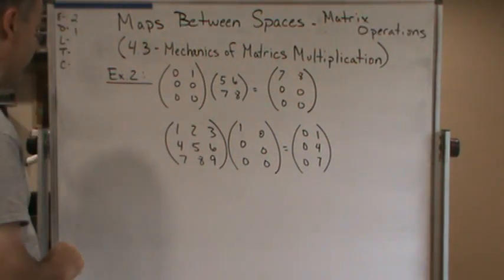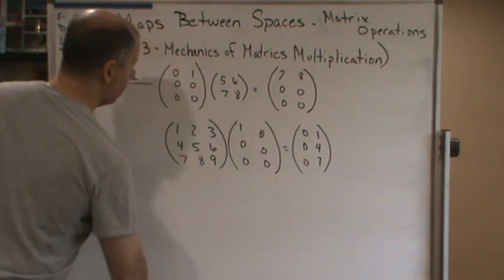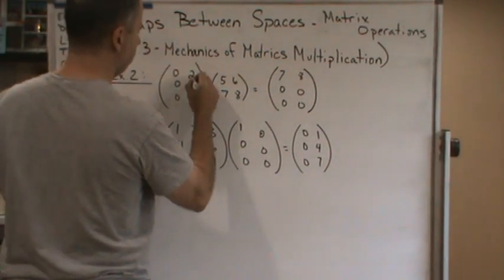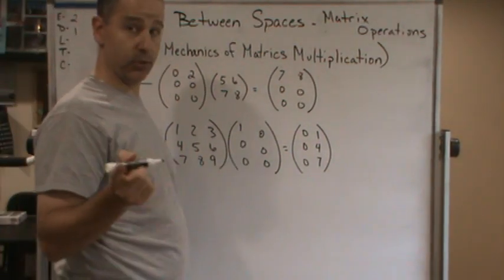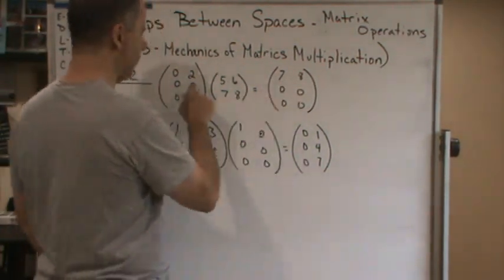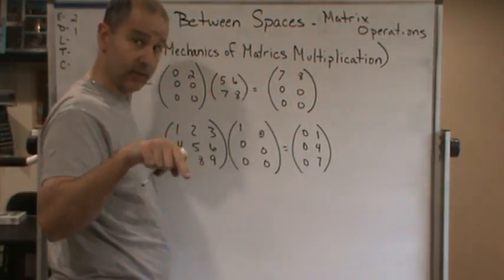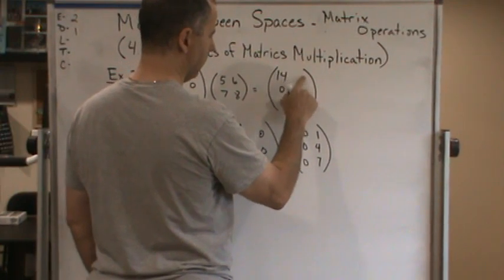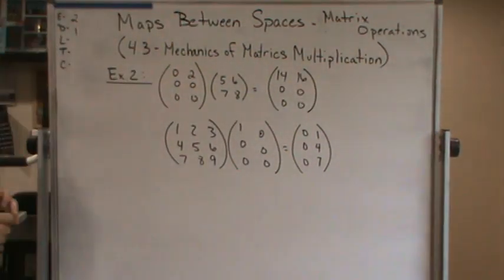Just to give you an idea of what's going on. Now, what if I make this a two instead? We already know what the matrix unit does — it just repeats seven, eight. Well, from previous discussions, making it a two is just going to double these, so this will be 14 and that'll be 16.